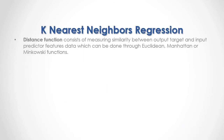Distance function consists of measuring similarity between output target and input predictor features data, which can be done through Euclidean, Manhattan, or Minkowski functions. As a formula, here we have the example of the Euclidean distance function between x, which is input predictor features data, and y, which is the output target feature data, equal to the square root of the sum from the first to the last of the differences between input predictor features data minus output target feature data, raised to the power of 2.